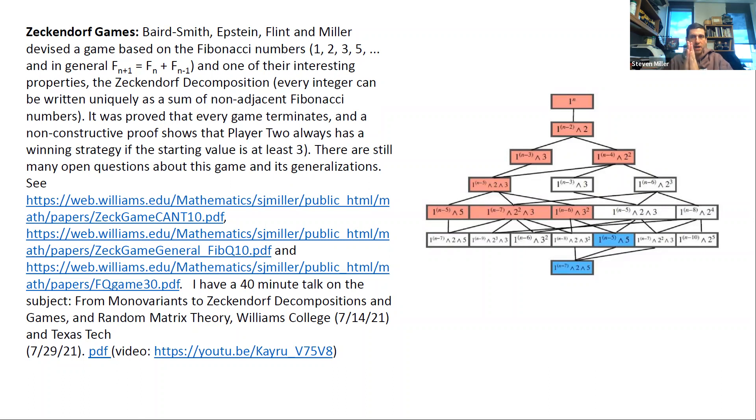So you can prove that as long as you don't start off with the number two, player two always has a winning strategy. It is a non-constructive proof. I would love to know what that winning strategy is, even if only in special cases. So there's a huge number of things that can be investigated in problems along these lines.